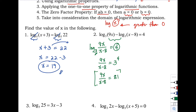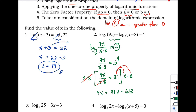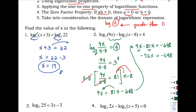Multiply both sides by (x − 8) to eliminate the denominator, then distribute: 9x = 81x − 648. Moving 81x to the left side: 9x − 81x = −648, which simplifies to −72x = −648. Divide both sides by −72 to isolate x.